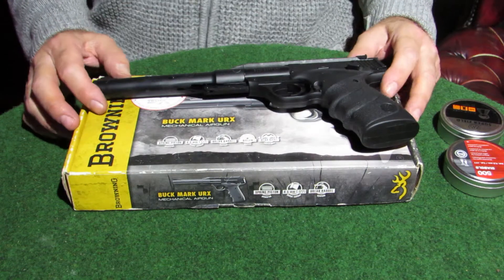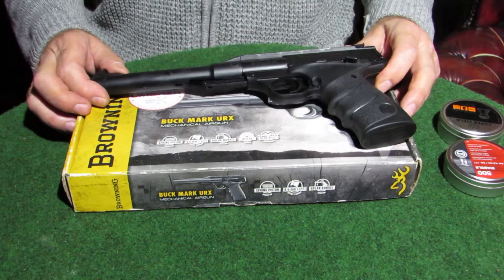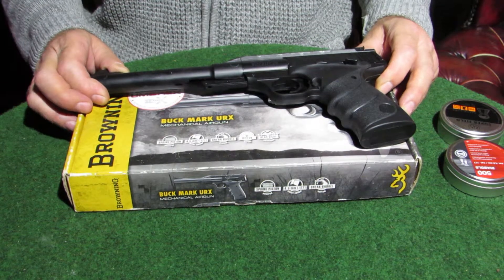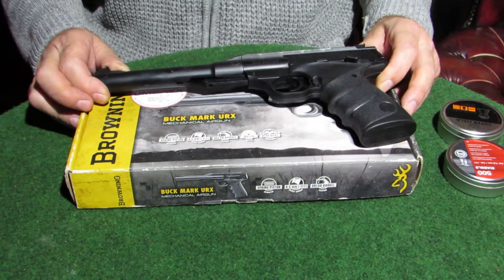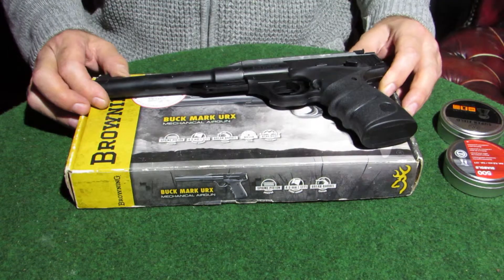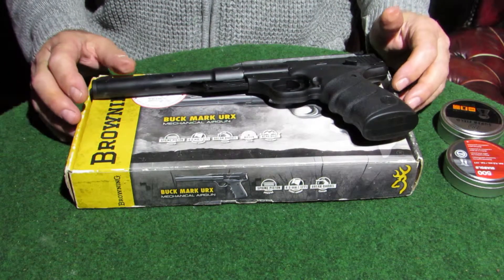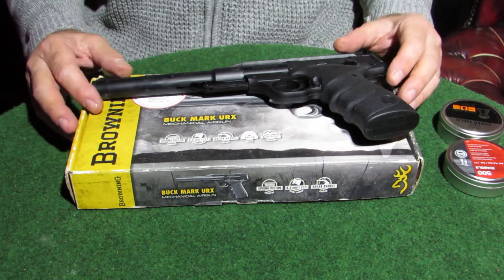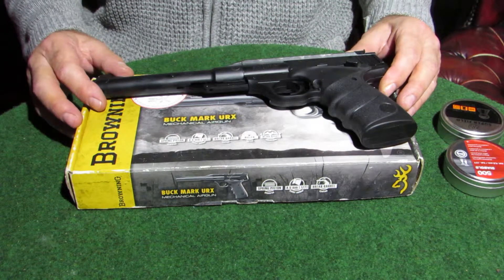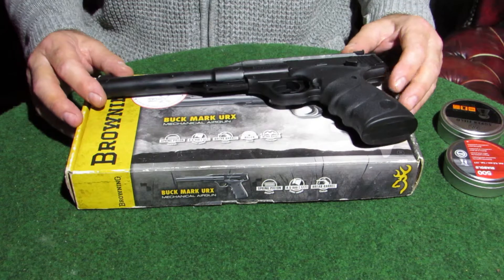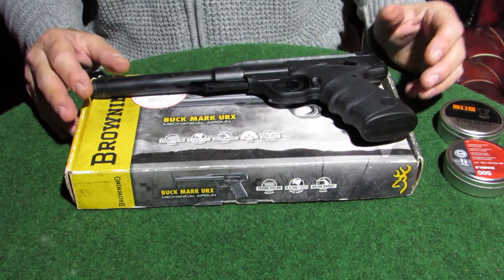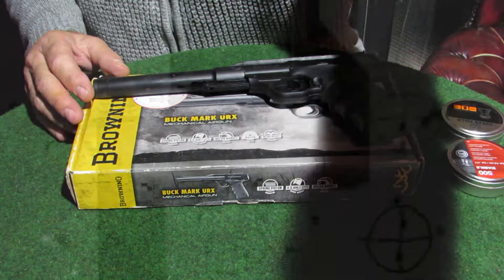So anyway, we're going to do a straight power test, two different weight pellets and give an average of 3 to 5 shots. And then we'll see if we can improve the power of it. And just a simple thing like putting some washers behind the spring to give it a bit more pre-compression. So we'll just do the power test now and we'll take it from there.